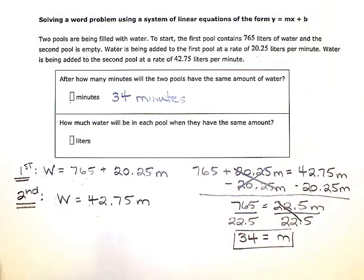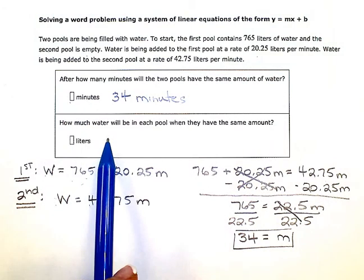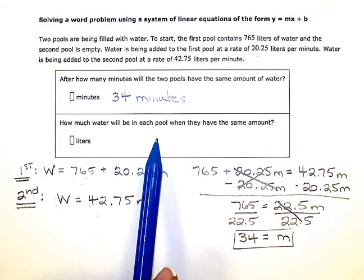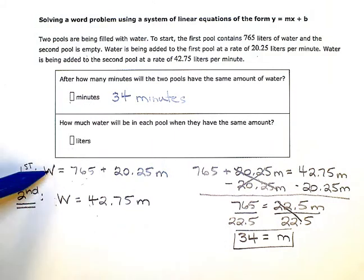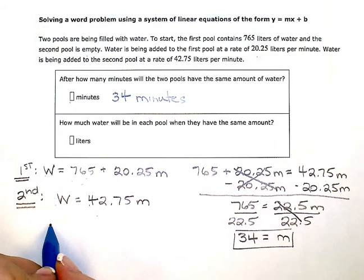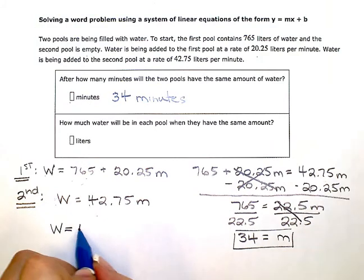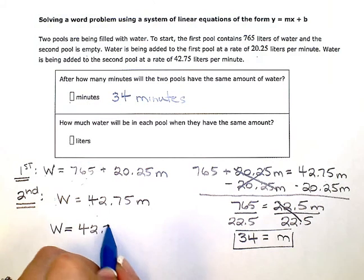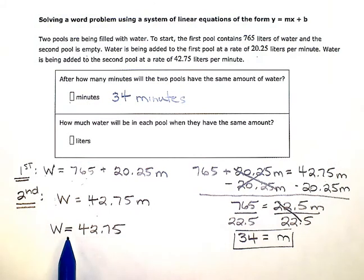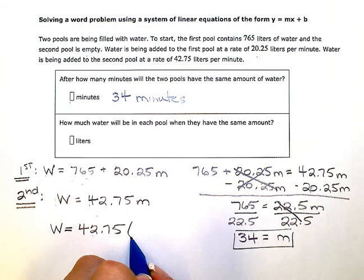Now how much water will be in each pool when they have the same amount? Since they have the same amount, it doesn't really matter which one of these two equations I use. But I want to know what's the total amount of water. So I'm just going to use this bottom one. I know that the second pool will have 42.75 times the number of minutes.